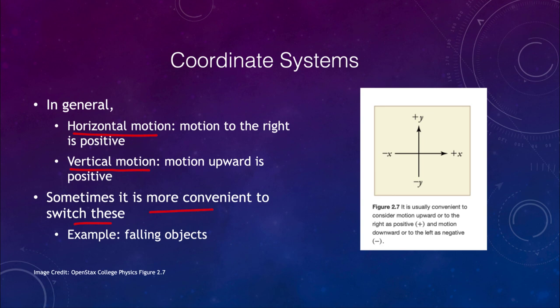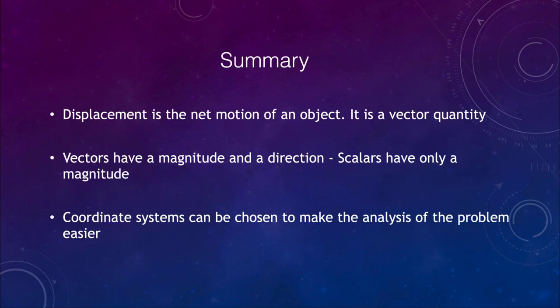So let's go ahead and finish up this unit, and we'll finish up this section with our summary. And what we've looked at is displacement is the net motion of an object and is a vector quantity. It has a magnitude and it has a direction as we see here. Scalars have only a magnitude. And we also talked about coordinate systems and how they can be chosen to help make the analysis of the problem easier.